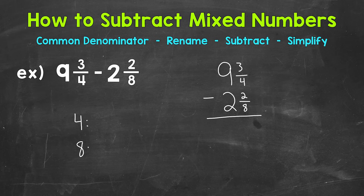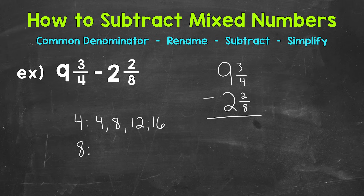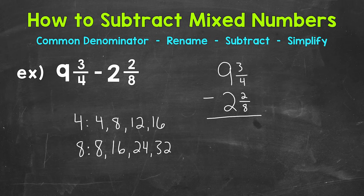We find a common denominator by looking for common multiples, and the least common multiple becomes our least common denominator. Let's write out multiples of 4 and 8. Multiples of 4: 4, 8, 12, 16. Multiples of 8: 8, 16, 24, 32. We can look for the least common multiple — the smallest number they share — which is going to be 8. So 8 is our least common denominator.